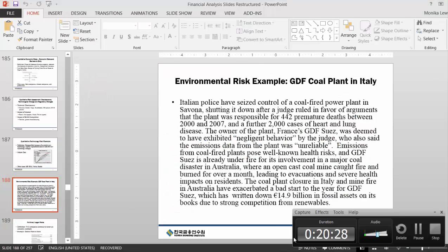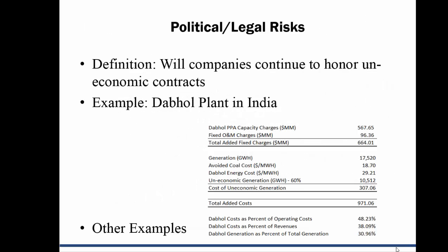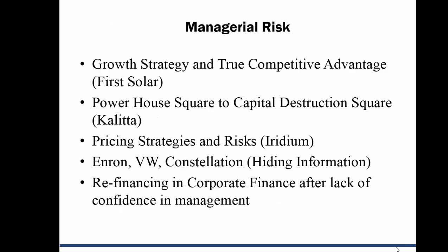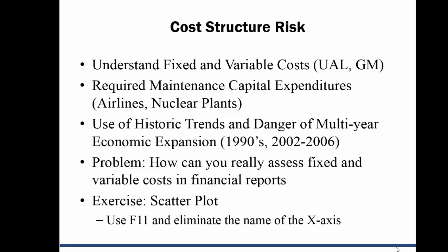Those are some of the things that can go wrong. We can look at them in an economic framework rather than an accounting framework. There are legal and political risks, managerial risk — do you really have a competitive advantage? And here's the cost structure risk: high fixed costs caused the United Airlines and GM bankruptcy. Maintenance expenditures in airlines are really like an O&M cost — that's a fixed cost. You've got to understand what's capex and what's really maintenance capex.